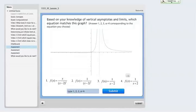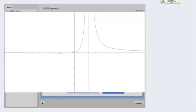Let's go over the answers to the assessment you just completed. Here was the first problem. Based on your knowledge of vertical asymptotes and limits, which equation matches this graph? Let's zoom in on the graph for a second and look at some of its main features. What stands out to us as important about this graph?